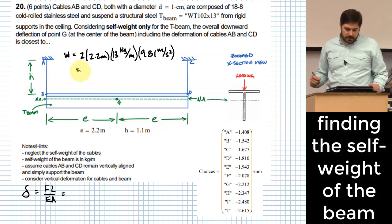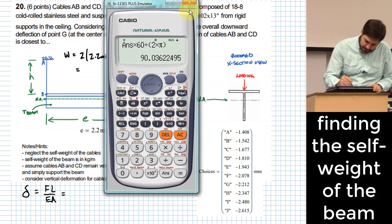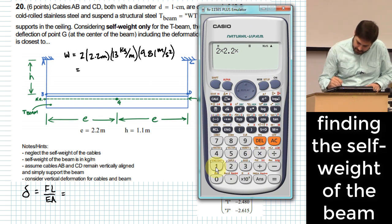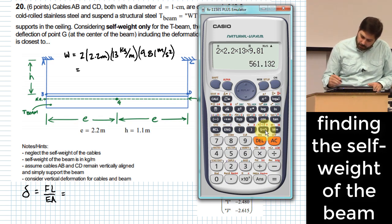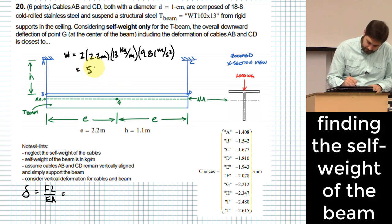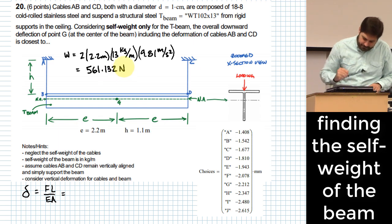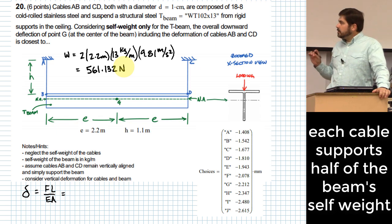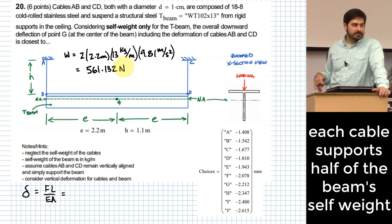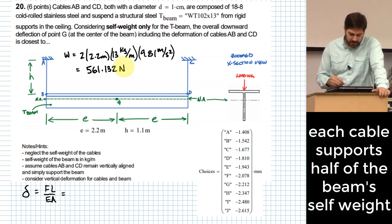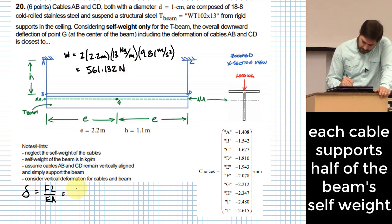So 2 times 2.2 meters times 13 kilograms per meter times 9.81 meters per second squared. And this W that I just found right here is not a force per unit of length anymore because I multiplied it by the total length, 2 times 2.2 meters is what gives me that total length. Okay, so let me actually calculate this real quick. 2 times 2.2 times 13 times 9.81 will give me 561.132. And this is going to be in Newtons, right? Now, this is a little bit tricky. How much of that weight is felt in each cable? Half. So I basically divide that by 2 again, and that's what I use for the F in this equation, right? I'm going to take 561.132 Newtons over 2.